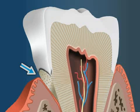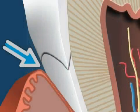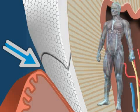Dental enamel is structured similarly to a crystal. The so-called enamel rod crystals, also called enamel prisms, are oriented in a specific geometric pattern.